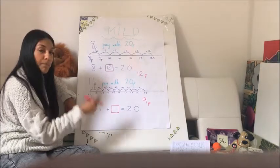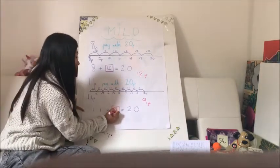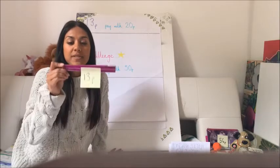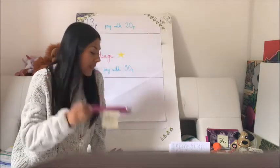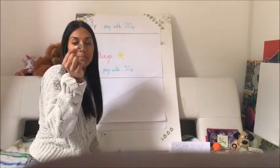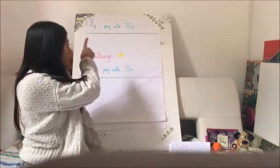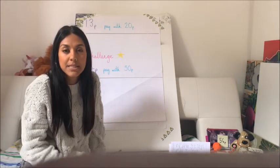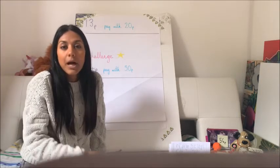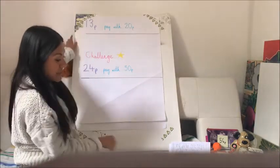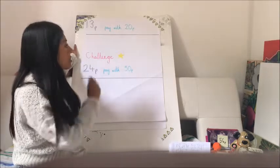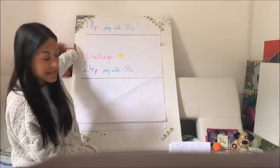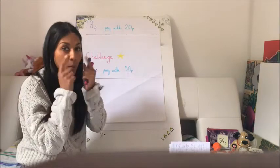The next item I would like you to work out the change for is this fan — it costs 13p. Again, I'm going to pay with 20p. Can you please use the counting on method and the empty number line to work out the change? I'd like you to pause the video, and with your piece of paper and pen try and work it out. The item is 13p, I pay with 20p — how much change will I get? I hope you've tried to work that out. Now I'm just going to show you, so keep watching to see if you were right.